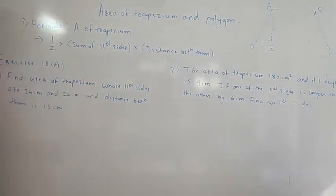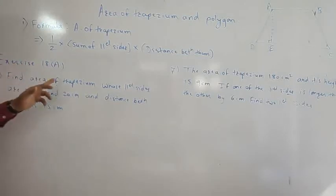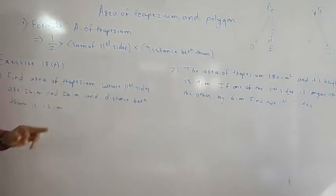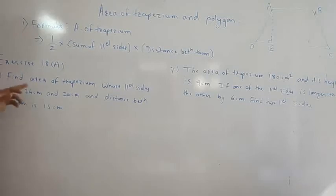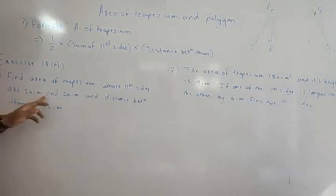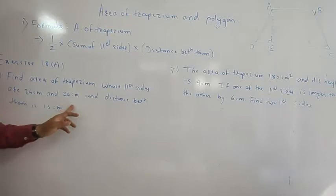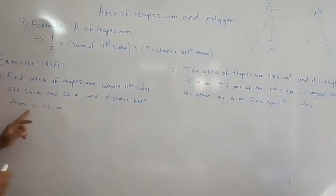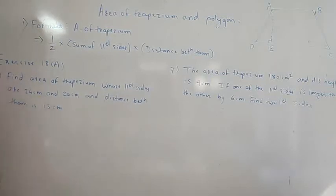We will now look at some numerical examples based on this. From Exercise 18a I have taken a question: find the area of a trapezium whose parallel sides are 24 cm and 20 cm, and the distance between them is 15 cm.